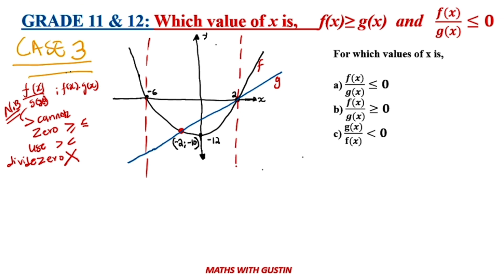We only have two x-intercepts here. So we are going to look at this — this is Stage 1. We're also going to have Stage 2, and Stage 3. But remember, when we reach these two points here, whether we are given greater than or equal to, we need to make sure that our g of x does not become zero, because we cannot divide by zero.